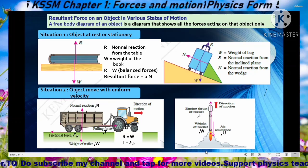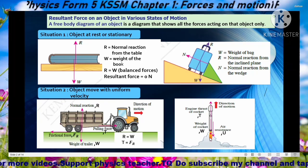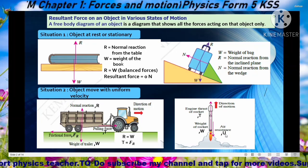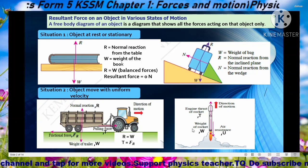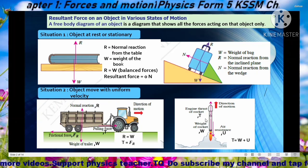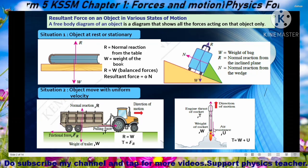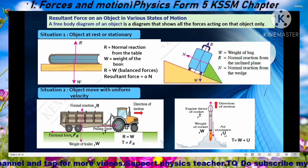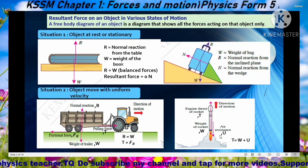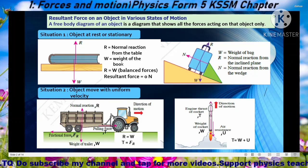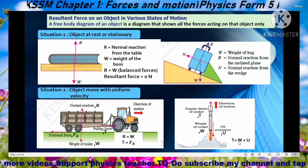This one is a rocket moving upwards. There is engine thrust T upward, weight W of the rocket downward, and air resistance U also downward. If the rocket is moving with uniform velocity, the forces are balanced. Weight W and air resistance U are in the same direction downward, so the total downward force is W plus U, and the upward engine thrust T must equal W plus U.